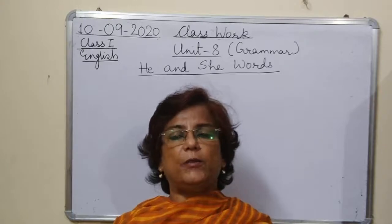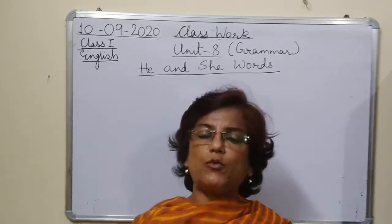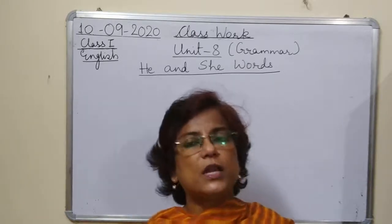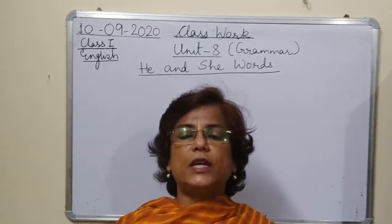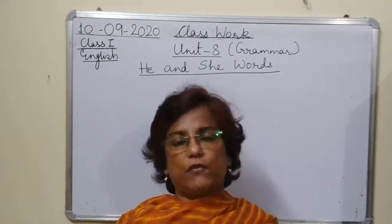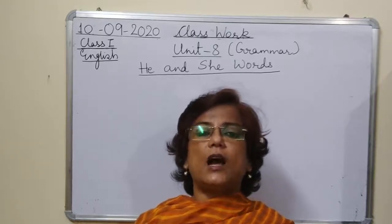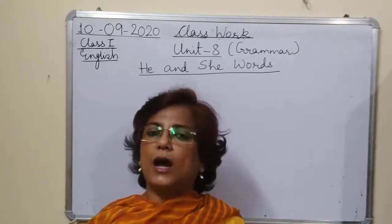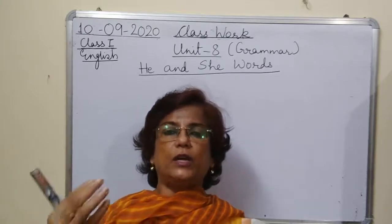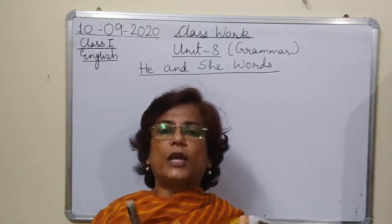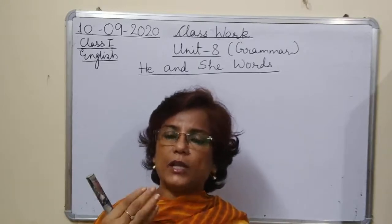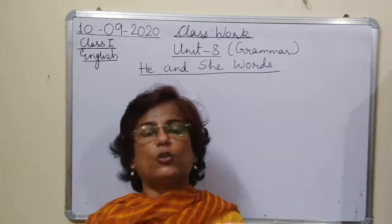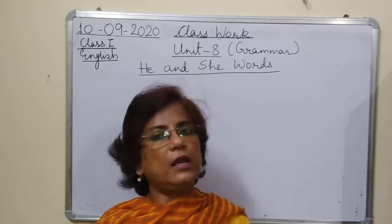So persons, animals and birds — they are known as male naming words and female naming words. The words for males are known as he words, and for females, she words. He — jab hum boy ya kisi male ki baat karte hain, like my father, brother, uncle, grandfather — when we talk about these people, then we use 'he.' If the naming word is to be replaced, we use he words in their place.